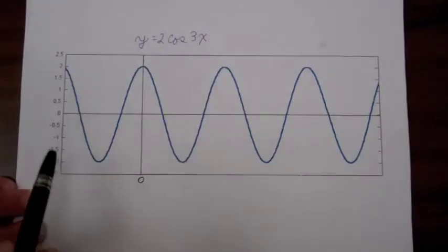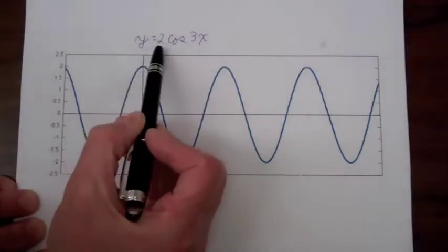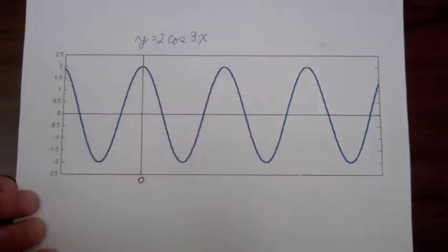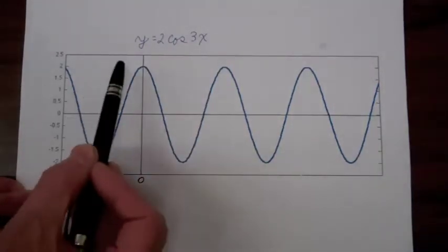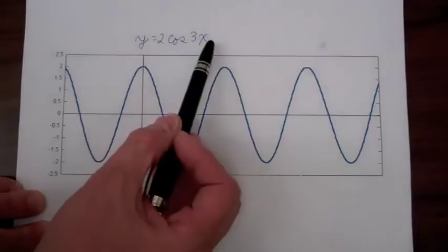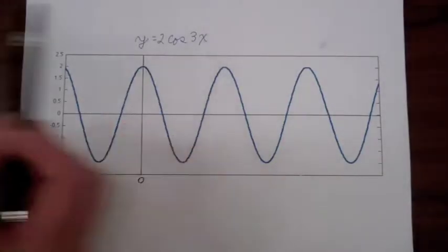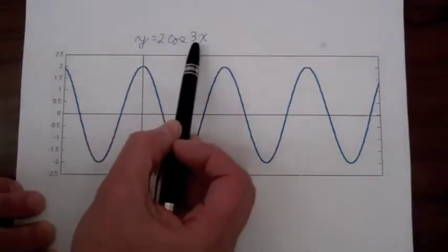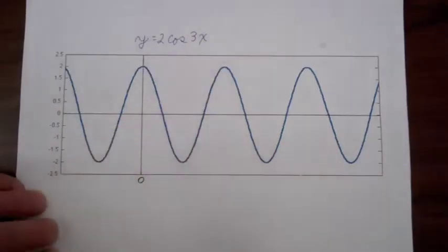Here I'm looking at the function y is equal to 2 cosine of 3x. We know that the cosine will vary between plus 1 and minus 1 as the argument of the cosine, which in this case is 3x, varies.